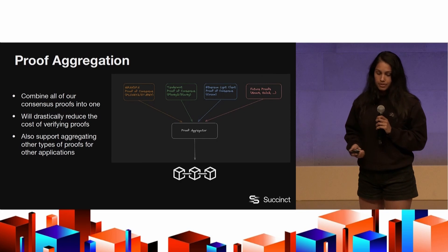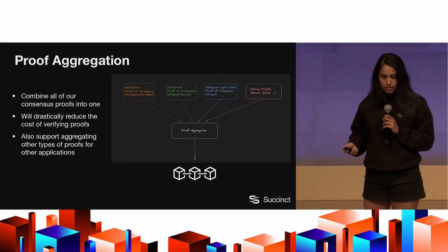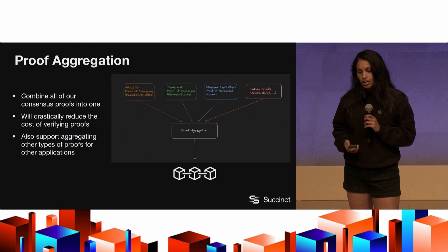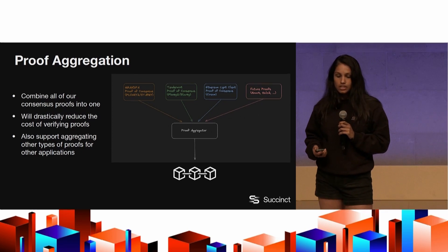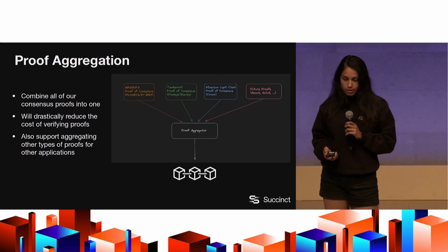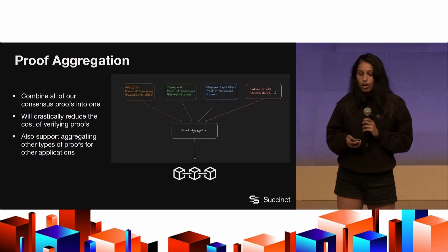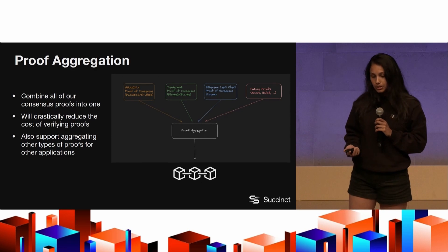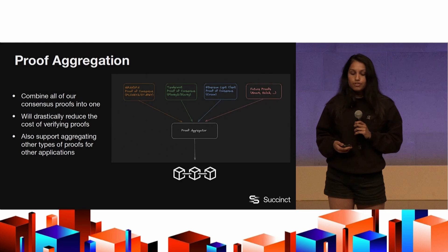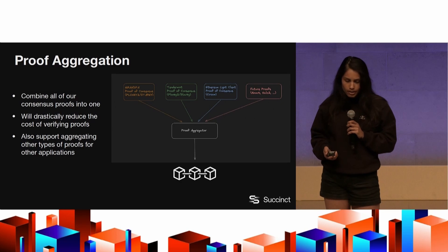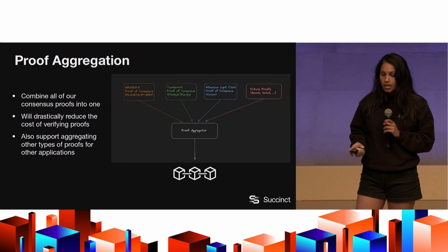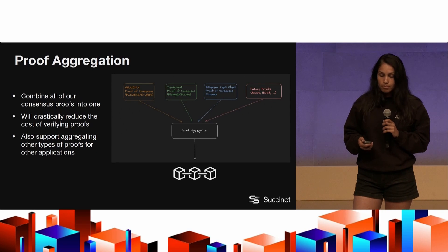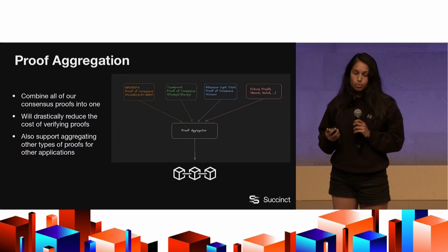Proof aggregation is super important. We've done proof composition of different proving systems, but eventually we'd have many consensus protocols verified in ZK circuits — a Grandpa proof, a Tendermint proof, our Ethereum light client, and others. You can take all these different consensus proofs coming into Ethereum, a very constrained computational environment, and aggregate all of them. This dramatically reduces the cost of verifying them on-chain, and you can verify proofs that aren't light clients as well. We think this will be a huge unlock for making gas costs much cheaper, and you can have the state of many chains on Ethereum more frequently.